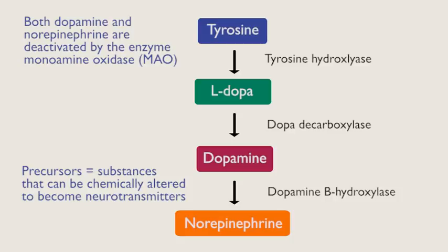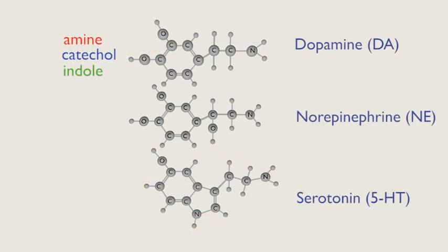The enzyme dopamine beta-hydroxylase converts dopamine into norepinephrine, another neurotransmitter. Neurotransmitters are classified into categories according to the standard naming practices in organic chemistry.